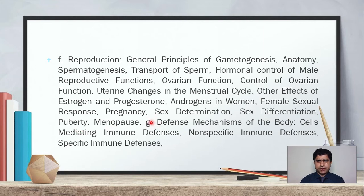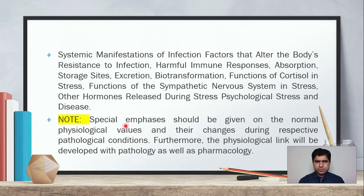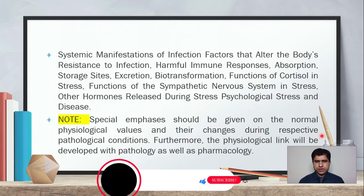Menopause and subheading G — the defense mechanisms of the body, including the lymphatic system, cells mediating immune defenses, non-specific immune defenses, and specific immune defenses. Systemic manifestation of infection, factors that alter the body's resistance to infection, harmful immune responses, absorption, storage sites, excretion, biotransformation, function of the sympathetic nervous system in stress, other hormones released during stress, and psychological stress and disease will be discussed. Special emphasis should be given on normal physiological values and their changes during respective pathological conditions.